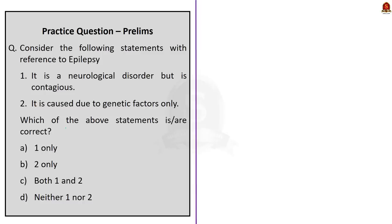Look at the second question. Consider the following statements with reference to epilepsy. Statement 1: it is a neurological disorder but is contagious. Statement 2: it is caused due to genetic factors only. You have to find the correct statement. Statement 1 is incorrect. The first part is correct—epilepsy is a chronic disease of the brain characterized by recurrent seizures. But the second part is incorrect because epilepsy is not contagious. Statement 2 is also incorrect. The causes of epilepsy are divided into structural, genetic, infectious, metabolic, immune, and unknown causes. It does not occur because of genetic factors alone. Both statements are incorrect. Our final answer is option D, neither 1 nor 2.